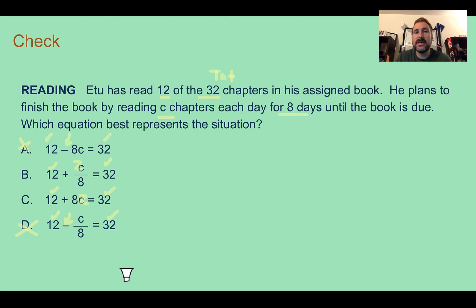Well, if he read two chapters and then divided that by eight, then that means he really only read a quarter of a chapter. Adding that to 12 is not going to get you to 32.